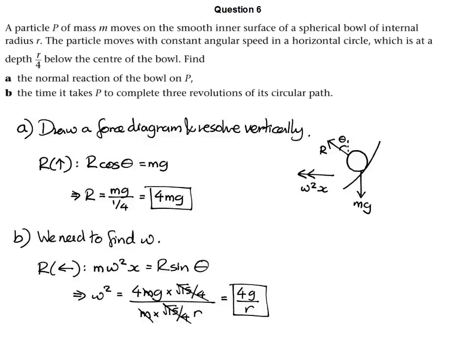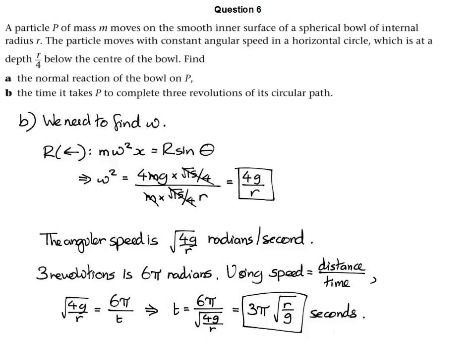Now it's very tempting to stop there, but that's not actually what it's asking for. It's not asking for the angular speed — it's asking for how long it takes to complete three revolutions of the circular path. In order to do this, we need to remember what omega actually tells us: it tells us the speed in radians per second. The only thing we need to know here is how far we have to move. Three revolutions is 3 times 2pi radians, which is 6pi radians. So we've got a speed, we've got a distance, we just need to use speed equals distance over time. Plugging everything in, it will take exactly 3pi times the square root of r over g seconds to complete 3 revolutions of the circular path.